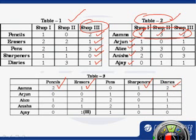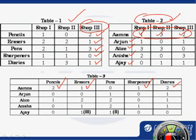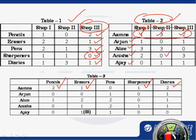Since Anisha did not buy any article from Shop 2, as we can see from the table, and since Shop 3 does not sell any sharpeners, we can say for sure that one sharpener was purchased by Anisha from Shop 1.